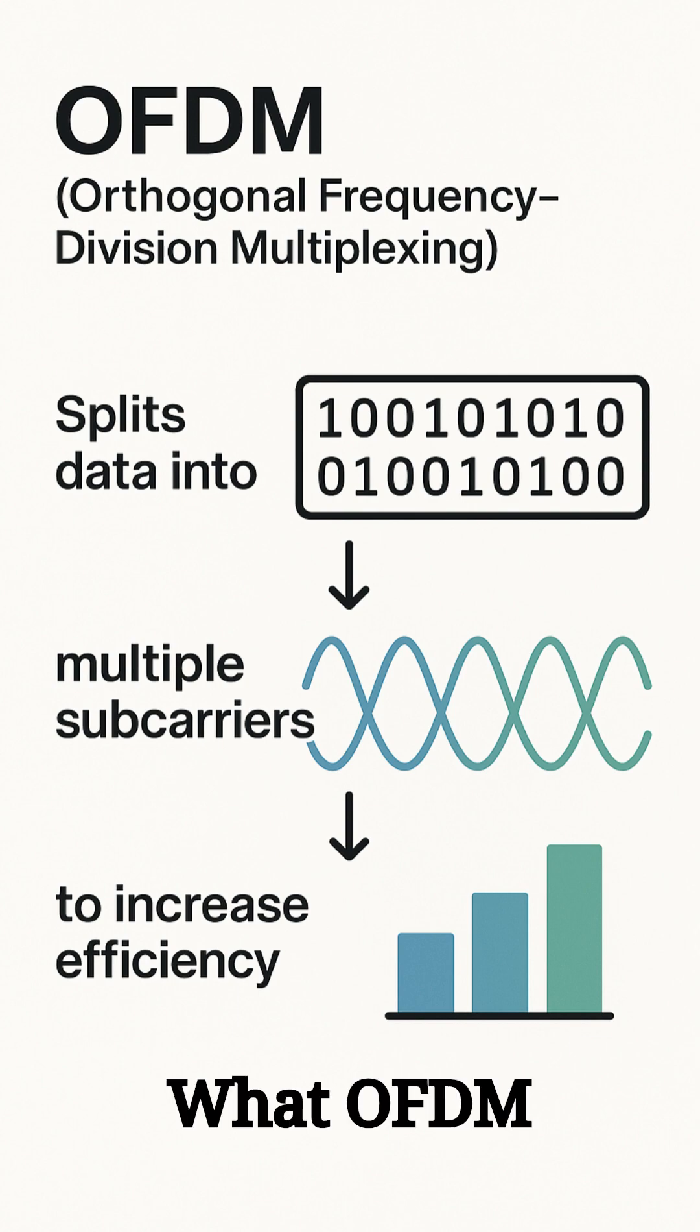What OFDM stands for. OFDM means orthogonal frequency division multiplexing. Sounds complex, but think of it like the pizza party analogy. Your data, a whole pizza, gets sliced into multiple sub-carriers, equal slices. These slices are sent simultaneously on different frequencies. The receiver reassembles them perfectly, no overlapping flavors.